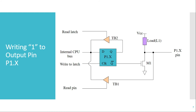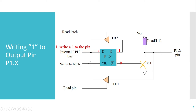Whenever we want to write logic 1 to the output pin, we send 1 to the internal CPU bus. That 1 will be available at the output Q of the D-latch, and Q-bar will be 0. Whenever Q-bar is 0, the MOSFET turns off, so there is no connection between the pin and ground. Since the pin is connected to VCC through the pull-up resistor, the signal on the pin will be logic 1. This is how the pin is driven high.